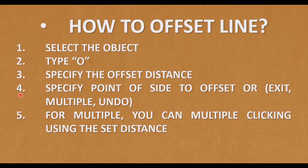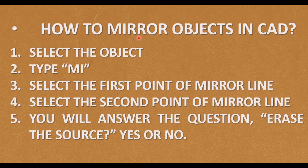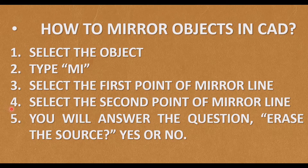Offset. How to offset a line: First, select the object. Second, type O. Specify the offset distance, and then specify the point of side to offset. You can also use options: Exit, Multiple, or Undo. For multiple, you can keep clicking using the set distance.